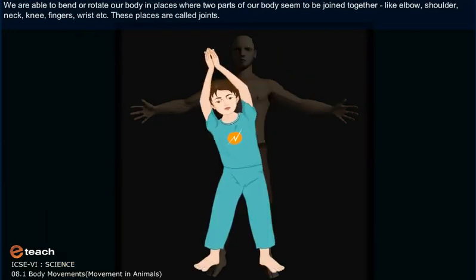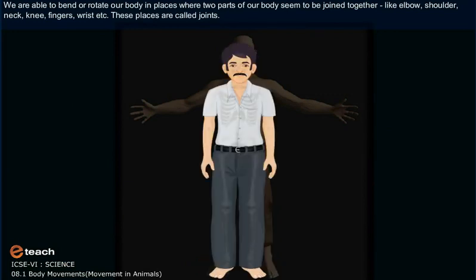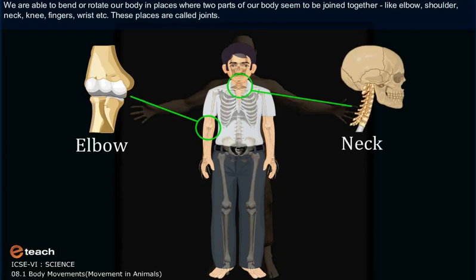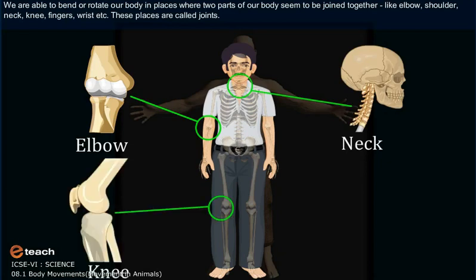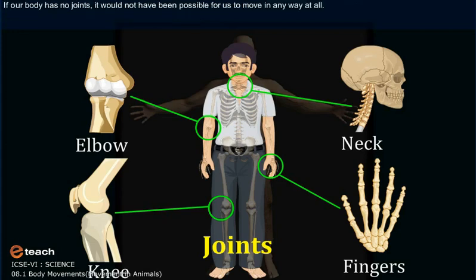We are able to bend or rotate our body in places where two parts of our body seem to be joined together, like the elbow, shoulder, neck, knee, fingers, and wrist. These places are called joints. If our body had no joints, it would not have been possible for us to move in any way at all.